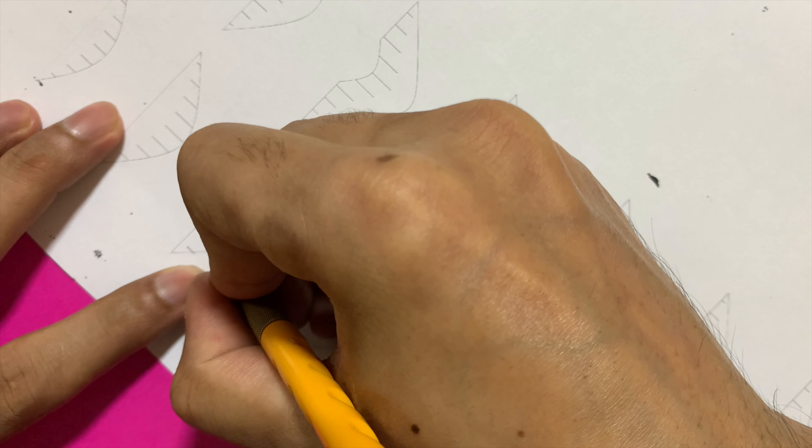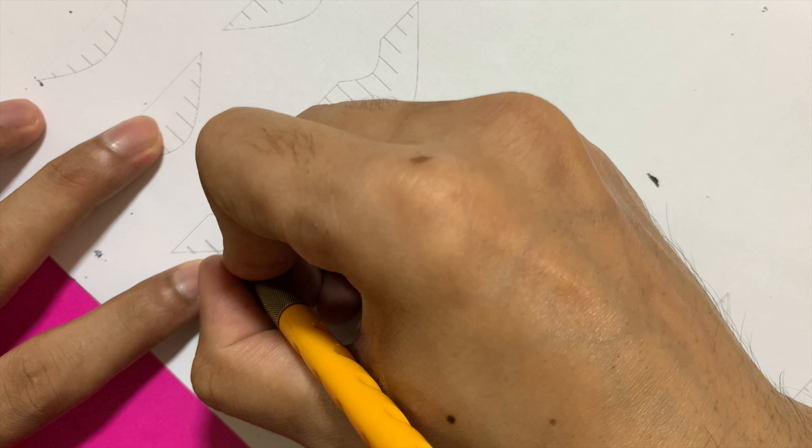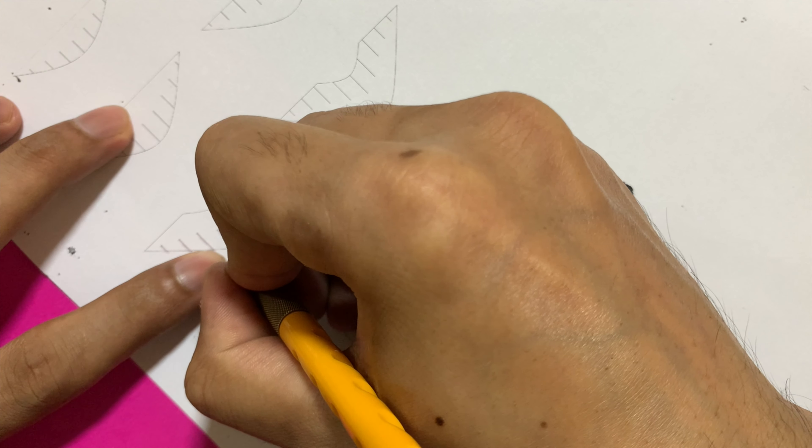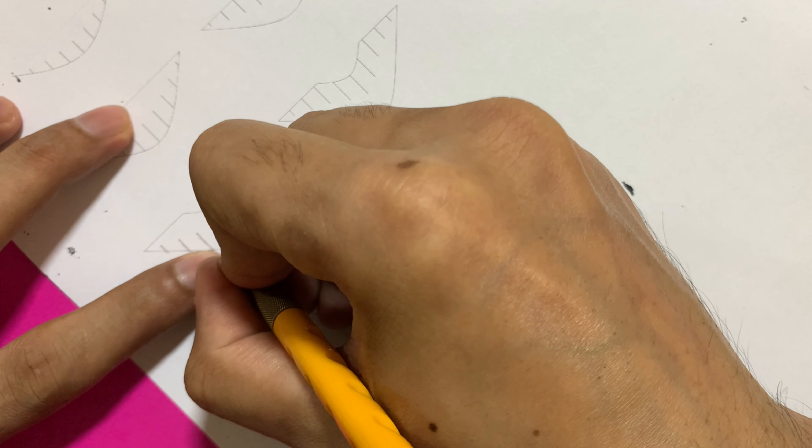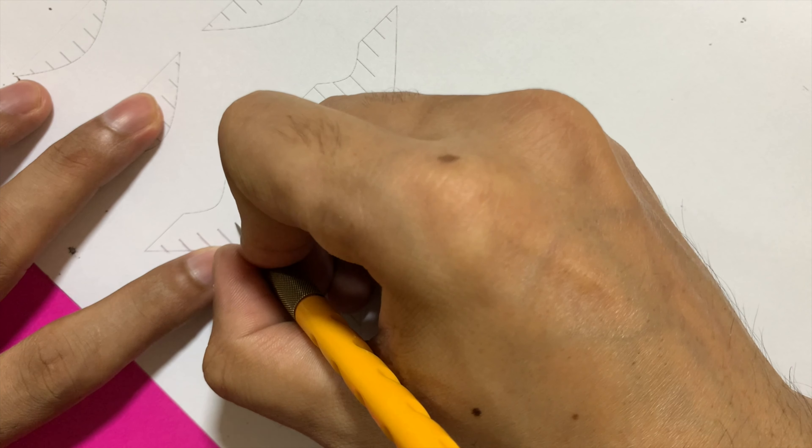So minimum recommended thickness is that you should start with 200 GSM at least, and if you go higher up to 300 GSM then it's good because there needs to be a certain rigidity to the structure, a certain robustness to the structure which can only be achieved in a higher GSM paper.